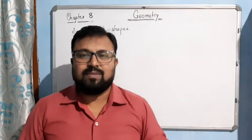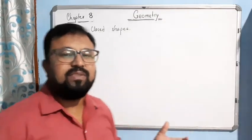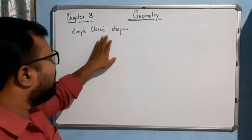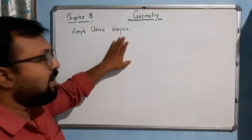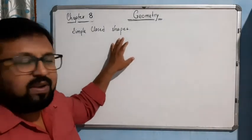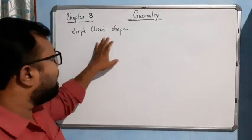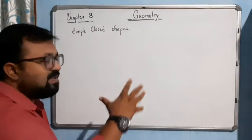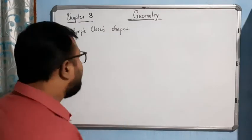Hello students, welcome to the next topic of this chapter. The next topic is simple closed shape. What do you understand by simple closed shape? Let me draw some pictures and then I will explain it.